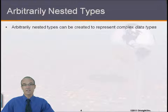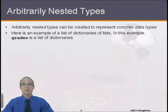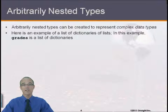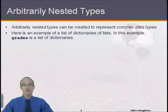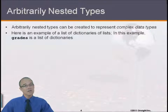Arbitrarily nested types can be created to represent what's known as complex data types. Sometimes we have complex data that needs to be represented in variables. For instance, we may have a list of records, where each record can themselves be containing records, and in those records there can be lists of data. So that would be a list of dictionaries of dictionaries of lists — four levels of data within the data types. That would be arbitrarily complex.